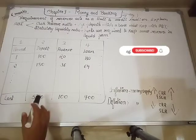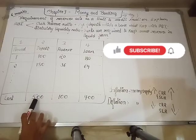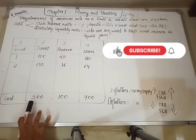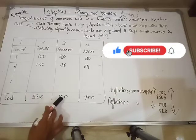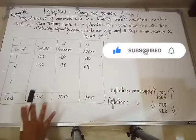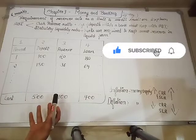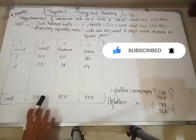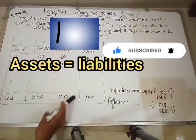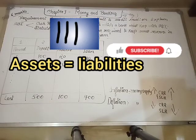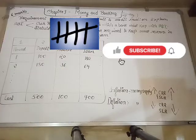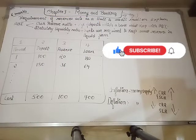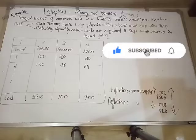Therefore, at the last stage, total deposits of the commercial bank equals reserves plus loans. If you look at the balance sheet, assets and liabilities tally: 500 equals 400 plus 100, which is 500. So the balance sheet tallies finally. This is how the banks keep the reserve with RBI, and this is about the working of the bank.